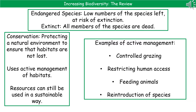One of the key ways we do this is through active management of habitats. This would be things like controlled grazing, restricting human access to it, feeding animals so that their loss of food is counteracted, and reintroducing species to the wild when we've carried out captive breeding programs. The key thing here is that we are still using the resources, but in a sustainable way.